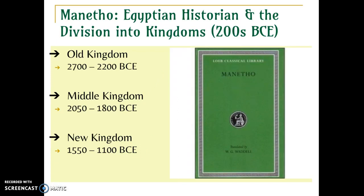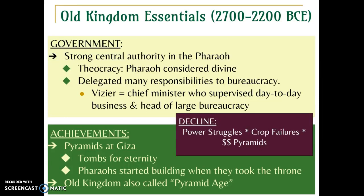Let's begin with the Old Kingdom. Your chart corresponds to each kingdom, and we'll talk about some highlights to review the notes you've already taken. With the Old Kingdom, we continue to see strong central authority develop in the pharaoh. Here's a good vocabulary word: theocracy — any government where the political leader is also the religious leader. The pharaoh was also divine, which is why people listened to him. He had a bureaucracy and a vizier, the chief minister, to supervise the day-to-day running of government.